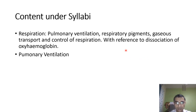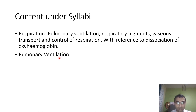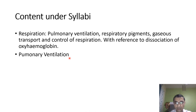Here you will see the contents under the syllabus: pulmonary ventilation, respiratory pigment, gaseous transport, control of respiration, and the dissociation of oxyhemoglobin. Under pulmonary ventilation we will read two topics: the mechanism of ventilation, and then in the next lecture, pulmonary volume and capacities.